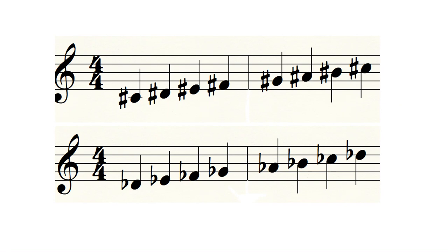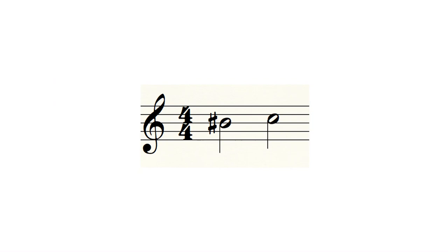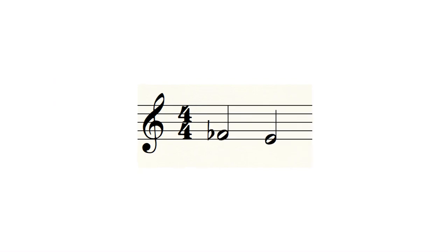All of these symbols collectively are called accidentals. Sharps can go on any note, however, not just C, D, E, G, or A. And as well, F and C can be flatted. So B sharp is enharmonic, meaning it has a different name for the same sound, with C natural. F flat is enharmonic with E natural.